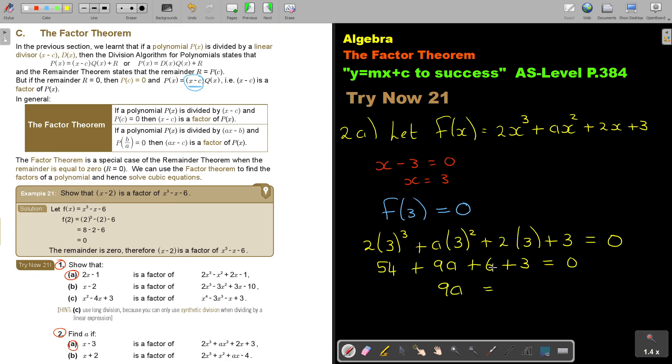Now, 54 plus 6 will be 60, plus 3, it's 63. So, if I take it over, negative 63. And I divide by 9. So, therefore, the value of a is negative 7. And that is my final answer.